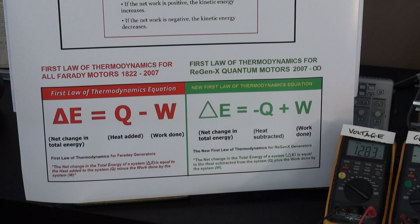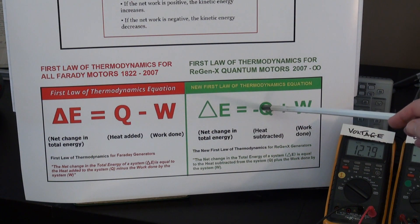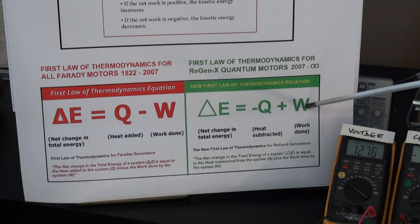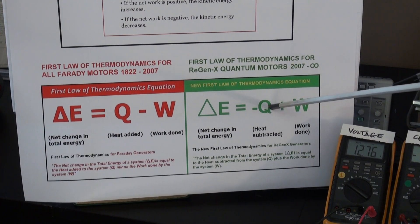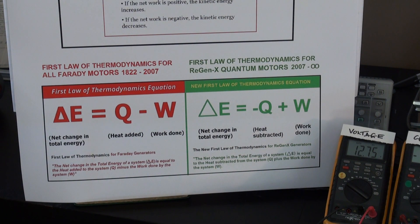In the RegenX quantum motor or RegenX supercharger — which would go into an internal combustion engine or an EV — the total change in energy is equal to the heat subtracted from the system (that's where we saw the input to the prime mover going down), plus the work that's being performed. So the more work we perform, the less input energy is required by the system and the less heat is produced.